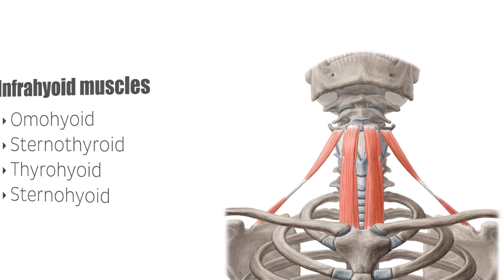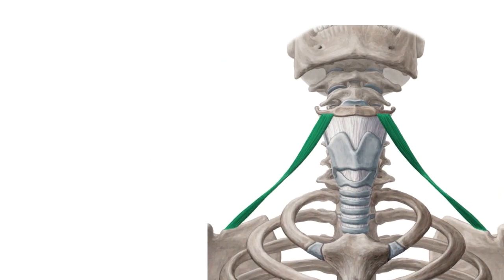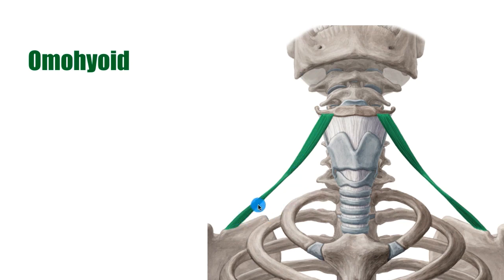Let's start off with the very first one on the list, shown from an anterior view of the neck and highlighted in green. This one is known as the omohyoid. The omohyoid is divided into two bellies — it has an inferior belly and a superior belly, divided by a tendon shown in a lighter shade of green.